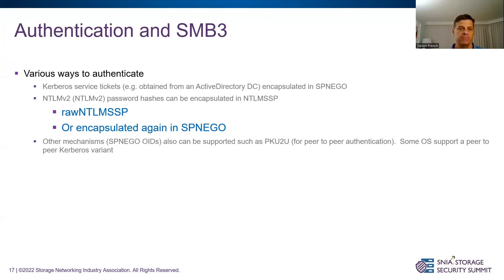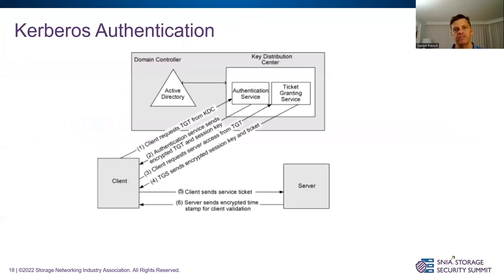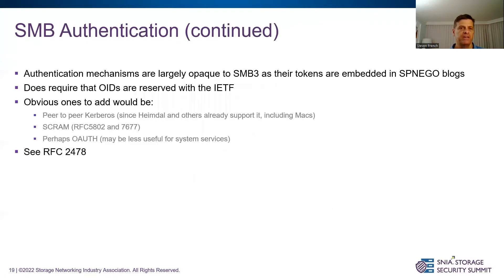There's a peer-to-peer Kerberos variant that Macs support, and SCRAM, another RFC internet standard. This is what Kerberos looks like: you log into a domain controller, obtain a ticket-granting ticket, then get a service ticket to contact the server. These are embedded into GSS-API and SMB authentication continues during the session setup phase. For details, see RFC 2478, and for details on SCRAM, RFC 5802.